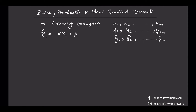If in the loss function we consider all m training examples, then the gradient descent would be batch gradient descent. For example, the loss function is the sum of (y_i-hat minus y_i) squared, from i equals 1 to m. Since we take the average loss we divide by m. Let's say our learning rate l is equal to 0.5, which is equal to 1/2.